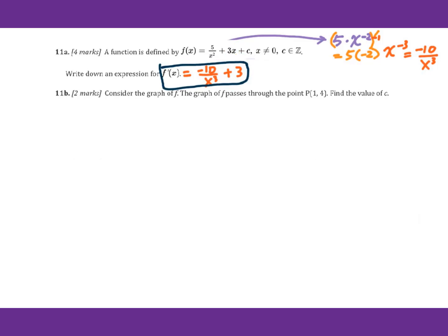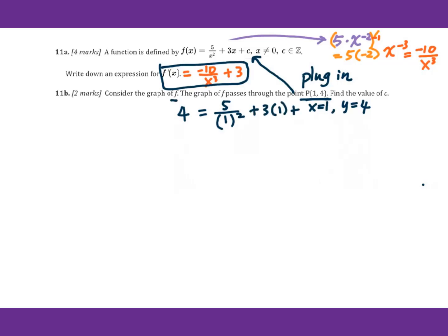Now let's go to 11b. Consider the graph of f — the function passes through the point, so it's a plug-in. Find the value of C. I plug in x equals 1, y equals 4 into this original function. So we get 4 equals 5 over 1 squared plus 3 times 1 plus C. That gives 4 equals 5 plus 3 plus C. Then C equals 4 minus 8, so C equals negative 4.